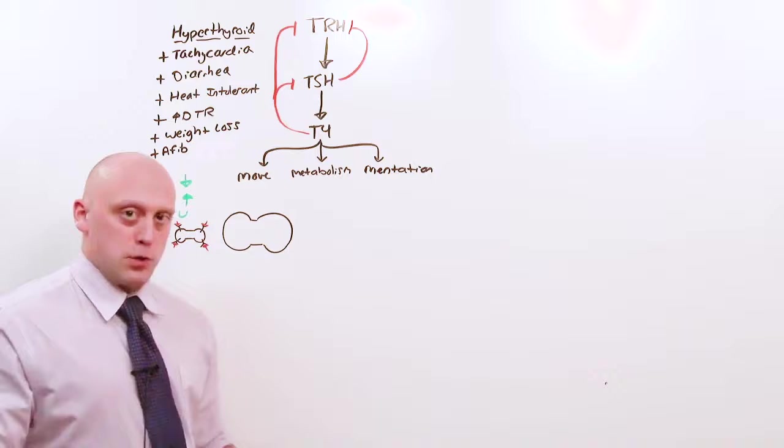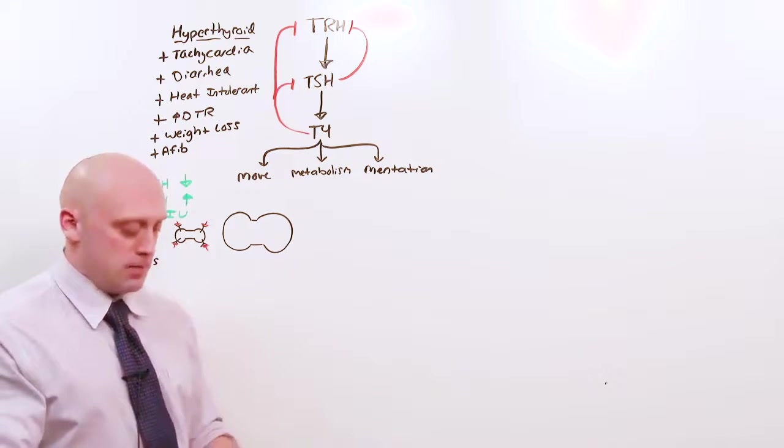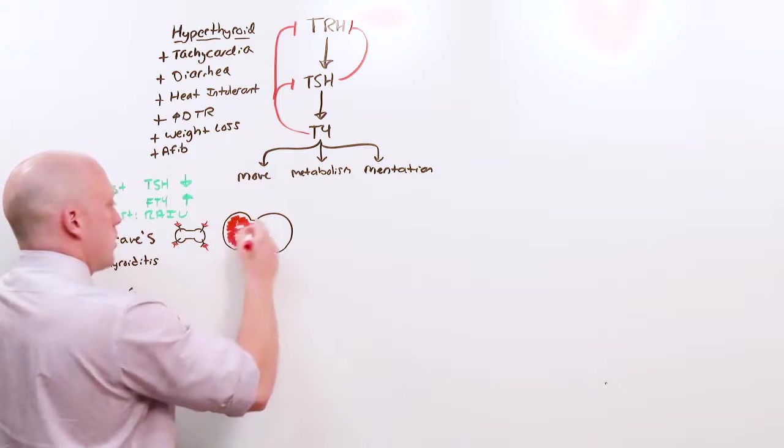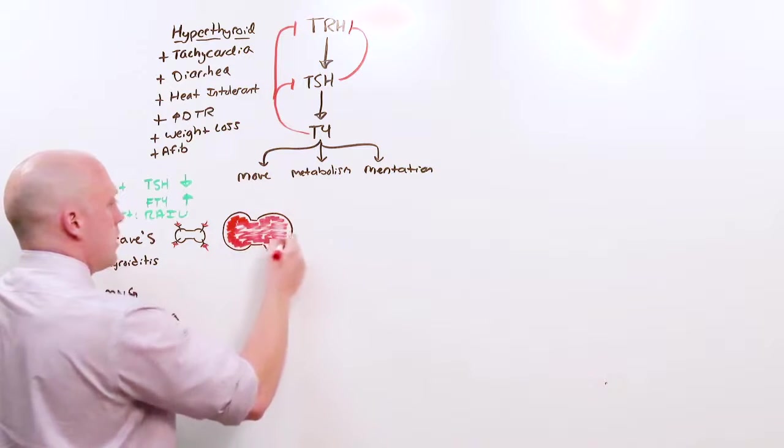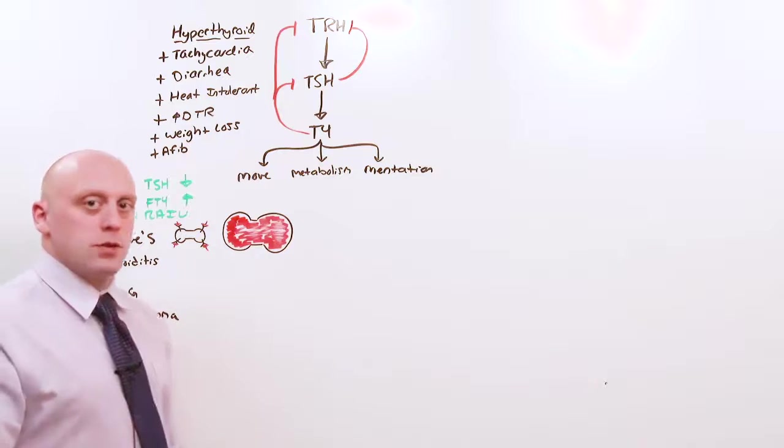The RAI uptake scan works by uptaking radioactive iodine wherever T4 is being made. In Graves' disease, since these receptors are everywhere, everywhere is producing T4. So what you'll see on the scan is the whole thyroid lights up. That tells you it's Graves' disease.